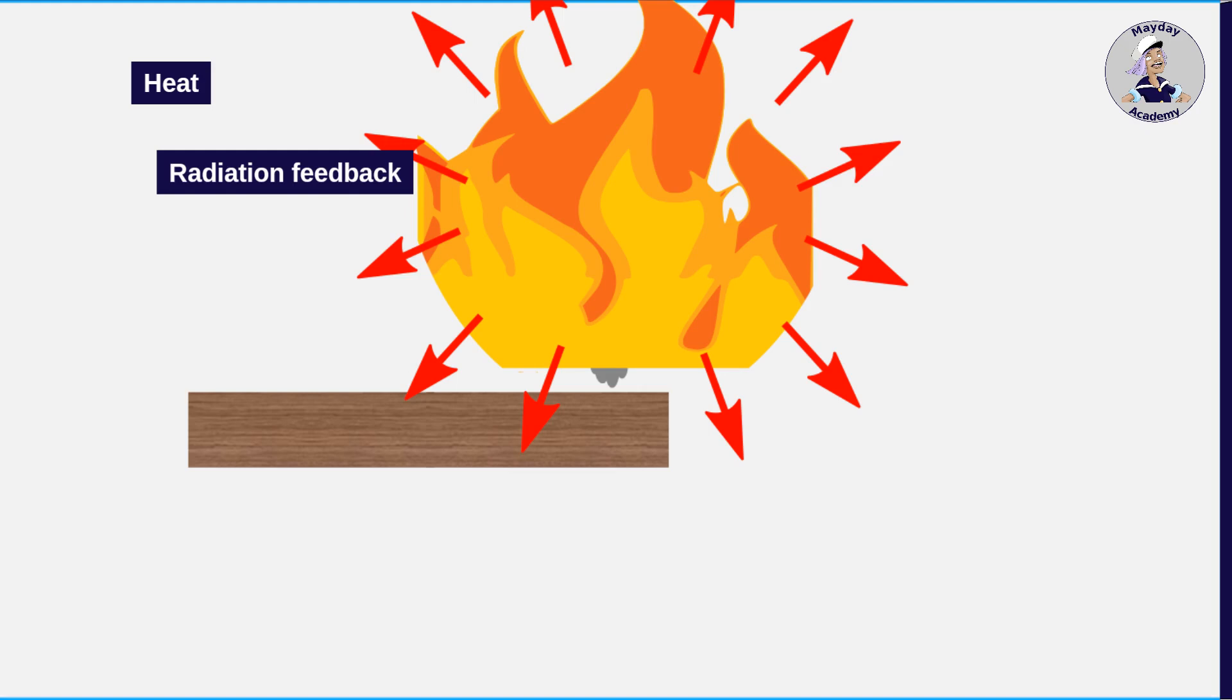A positive heat balance occurs when the fire returns heat to the fuel. A positive heat balance is necessary to sustain combustion. If the heat is dissipated faster than it is generated, the heat balance is negative. This is why we can extinguish a fire by cooling the fuel.